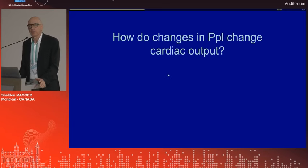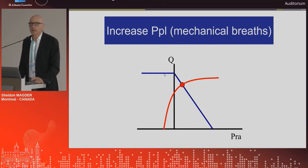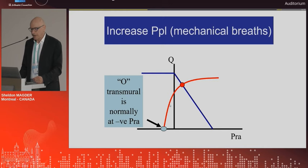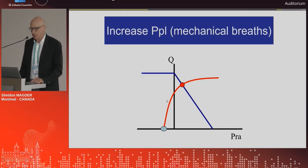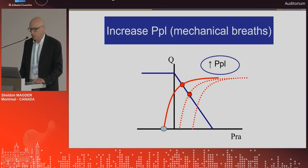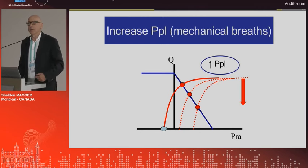How do changes in pleural pressure change cardiac output? We'll look at the positive side with mechanical breaths. Every time you breathe in with a device, you raise the pleural pressure. If you just applied PEEP, you would shift the cardiac function curve to the right. You then intersect the venous return curve at a higher right atrial pressure or CVP and have a lower cardiac output. And then with each breath, you go higher, and on each inspiration you lower the return to the heart further, causing a decrease in cardiac output that worsens with each breath.